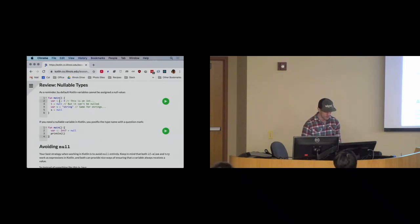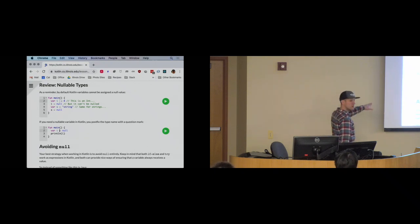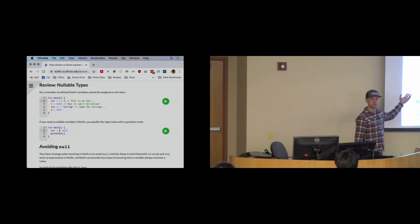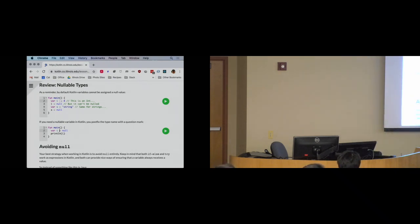You might think about why that's the case. Why do I have to specify a type for a nullable variable? Here I'm telling Kotlin it's going to be nullable — I'm assigning null to it. Why can't Kotlin infer the type of this variable?